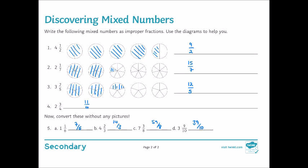Then finally the answers to 5 were 7 sixths, 14 thirds, 59 eighths and 39 tenths.